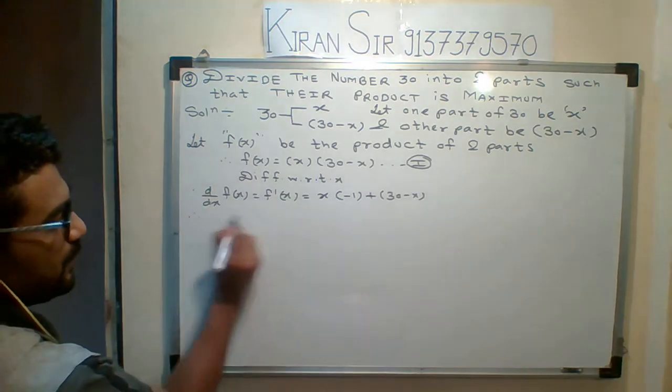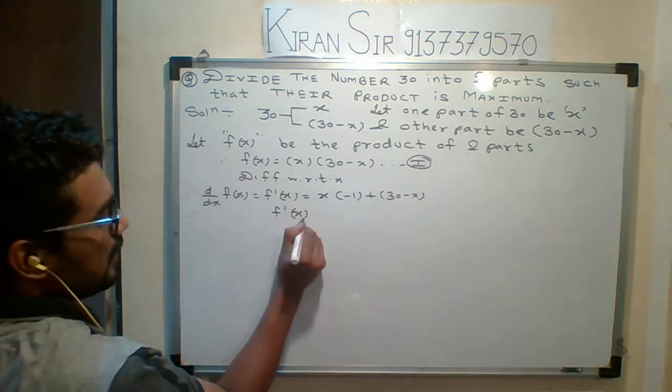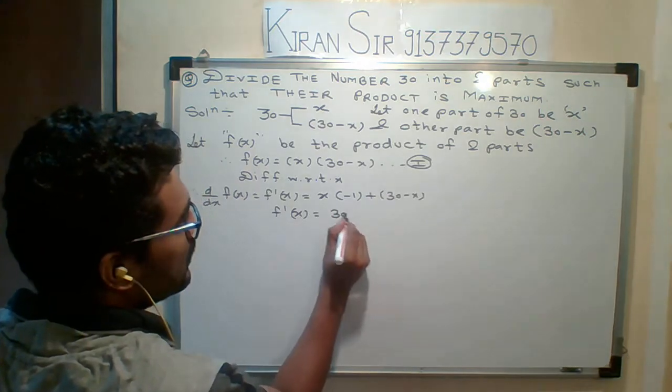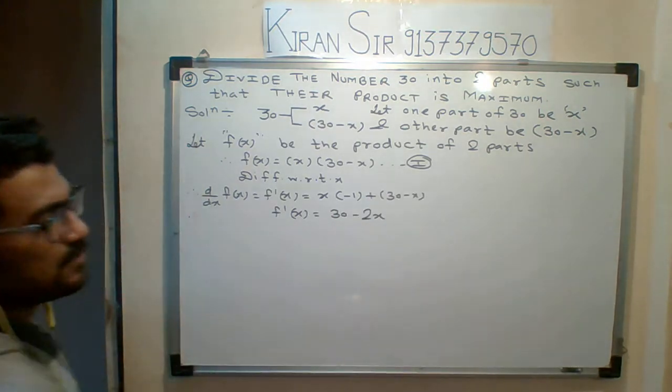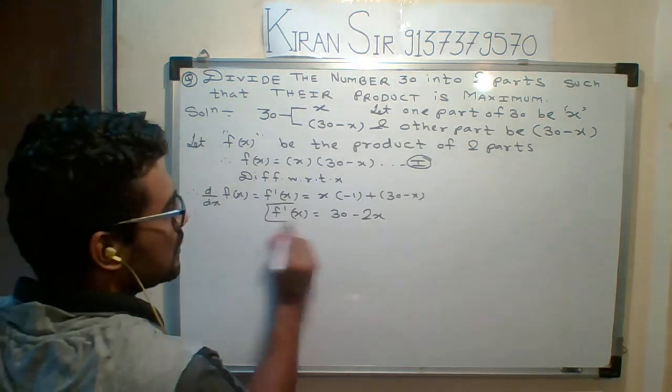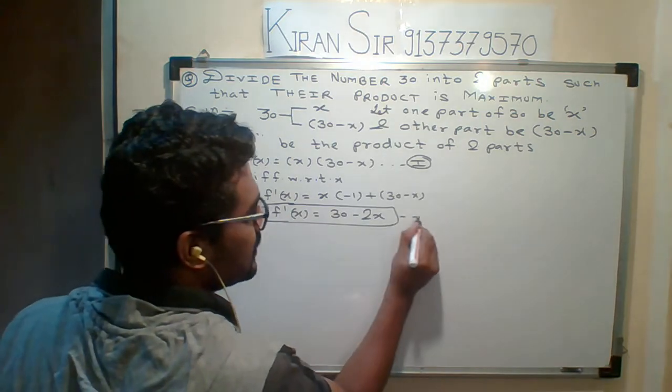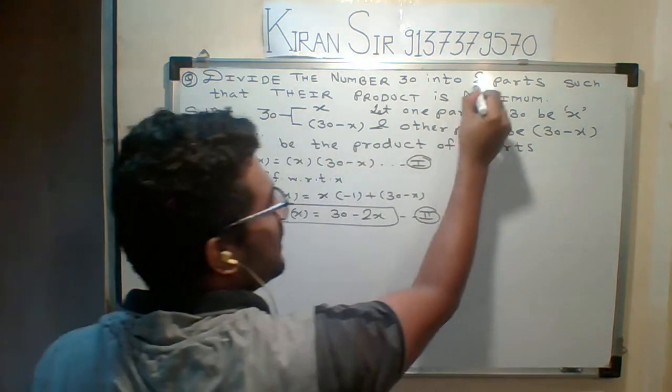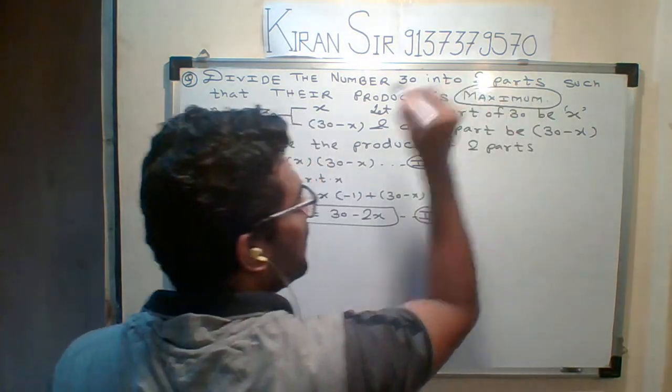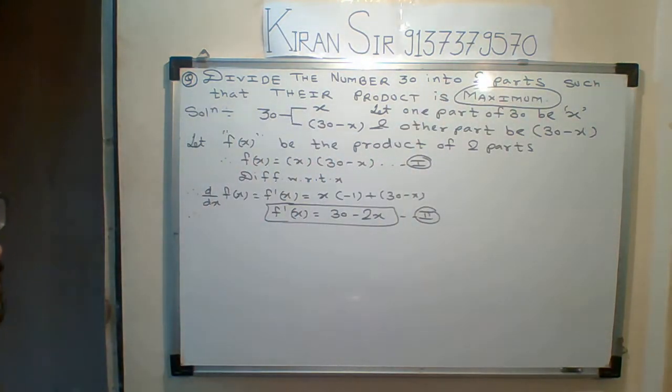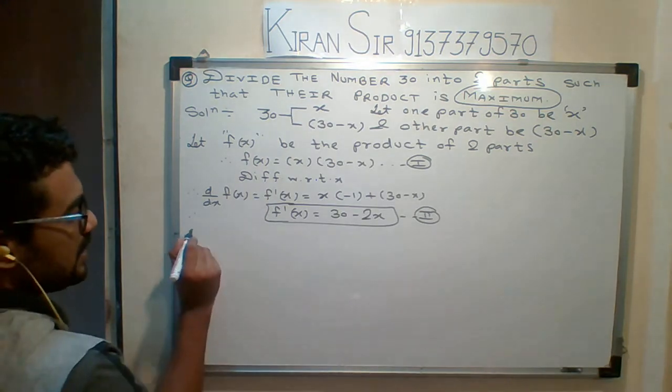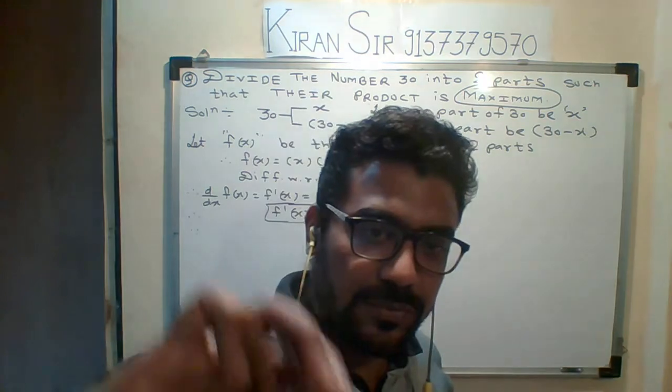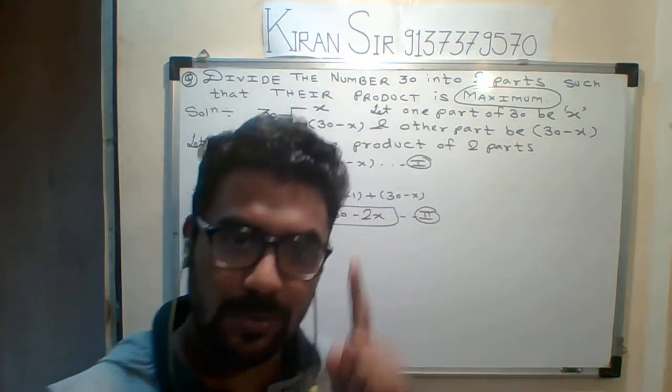So what is f'(x)? 30 minus 2x. This is your final answer of first derivative. Say this is equation number 2. What I will do in the next step: we will start checking which is the derivative, or x value, that we want for maximum. Now I need one condition. We only want one condition, we apply only one condition.